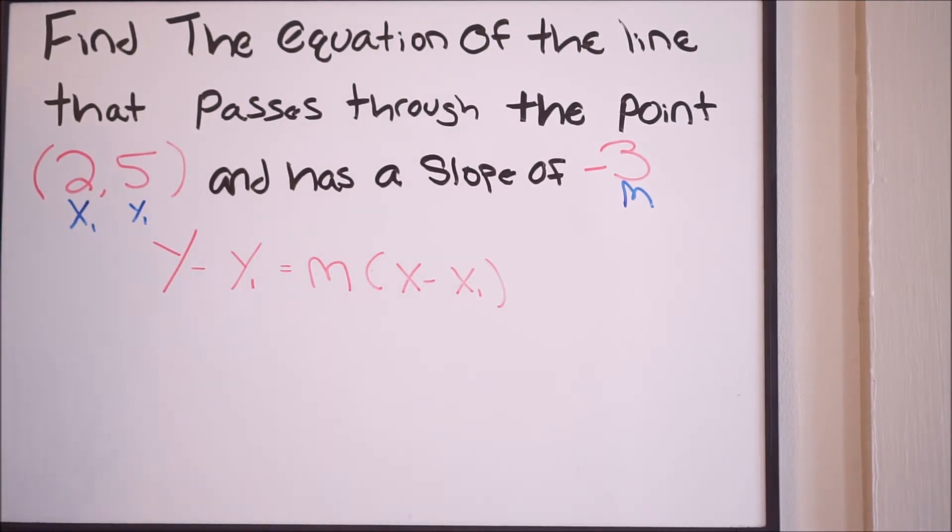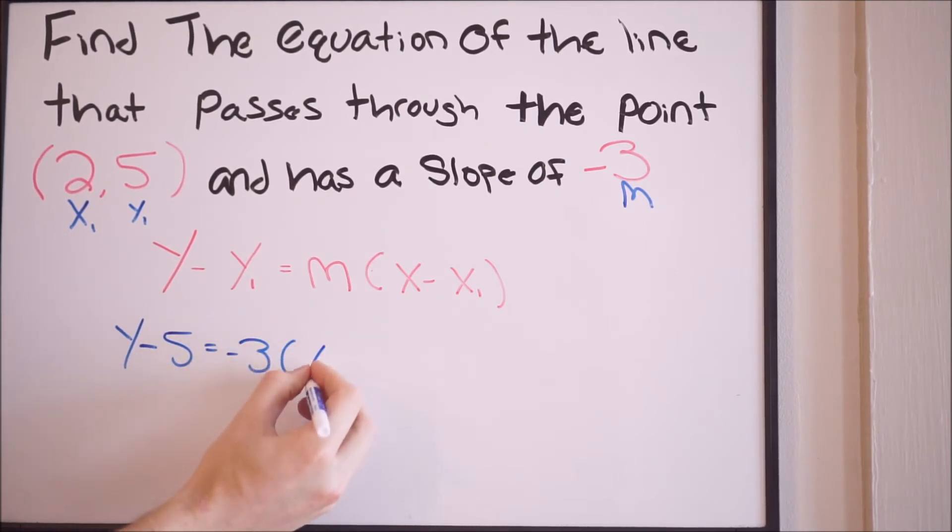So we're just going to go ahead and fill in these values. We're going to have y minus our y1, which is 5, equal to our slope, which is negative 3, and then we have x minus our x1, which is 2, so minus 2.